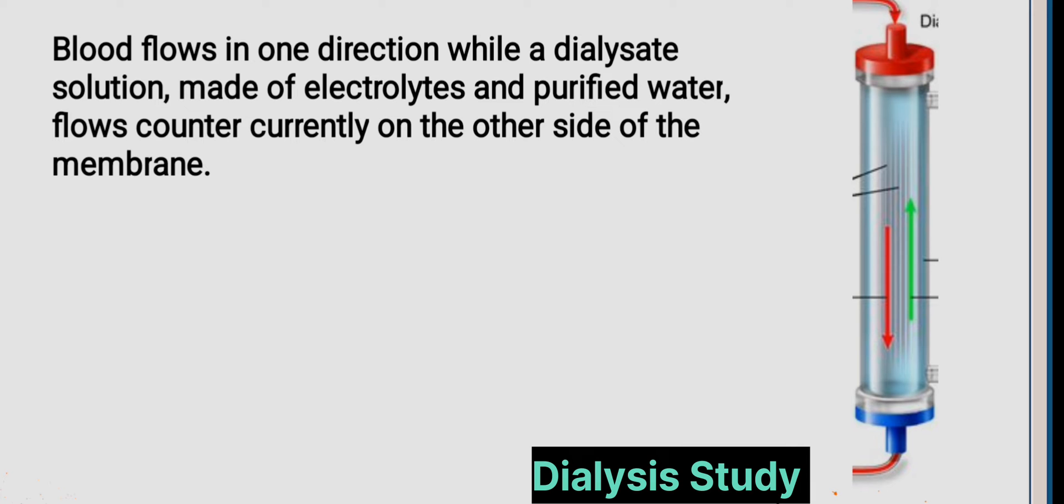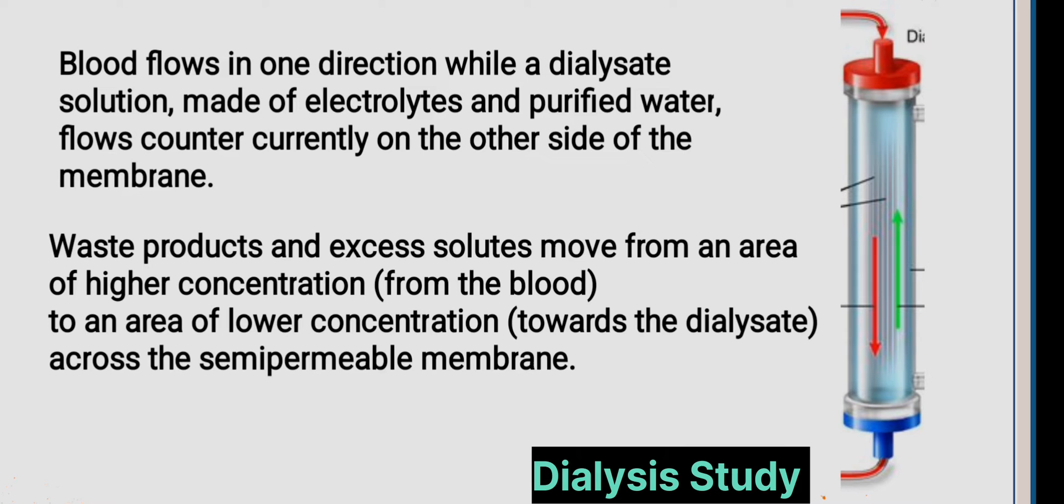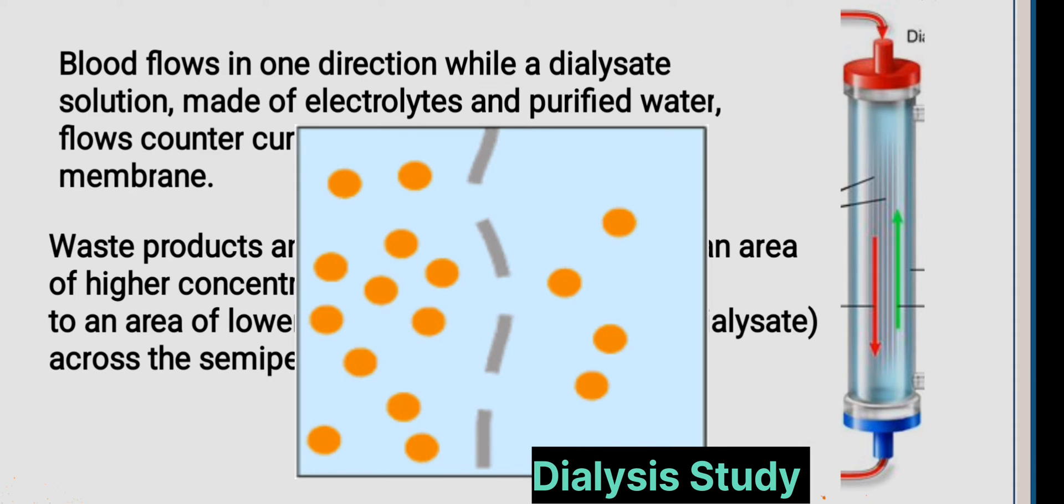Blood and dialysate are separated by a semi-permeable membrane. Waste products and excess solutes move from an area of higher solute concentration to an area of lower solute concentration through the semi-permeable membrane.